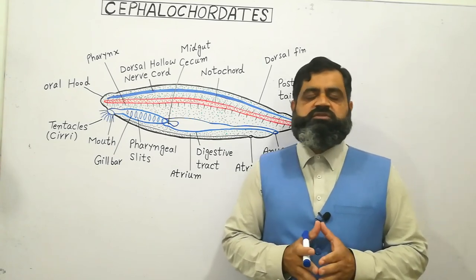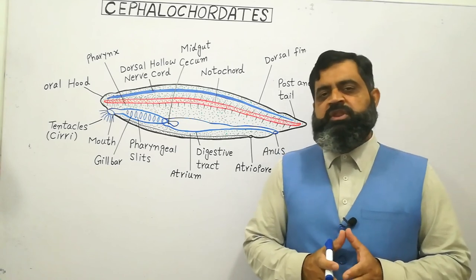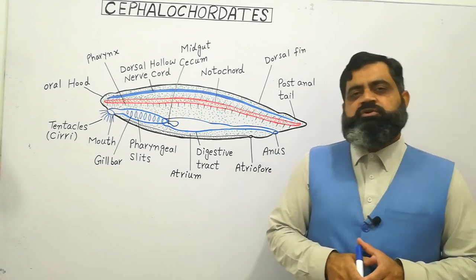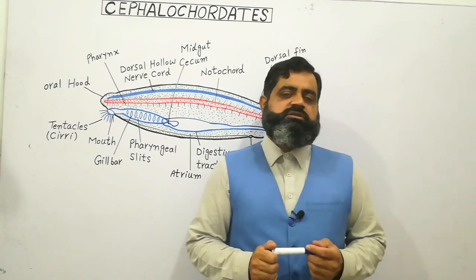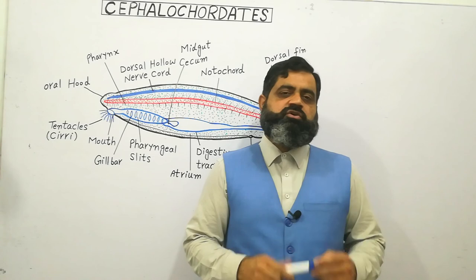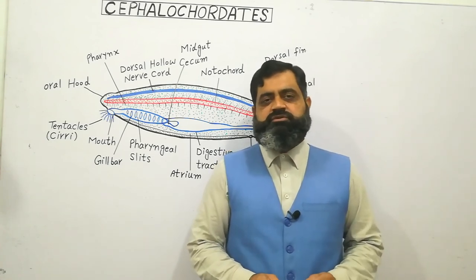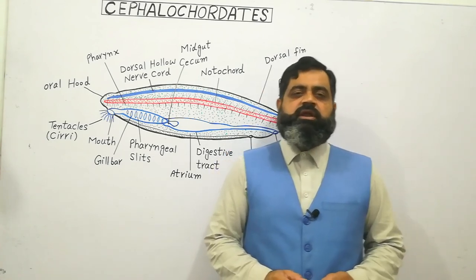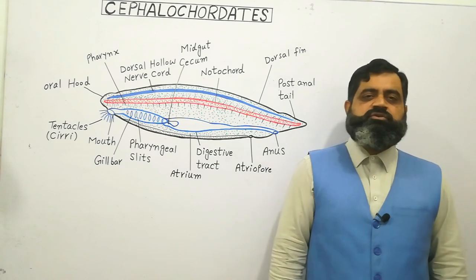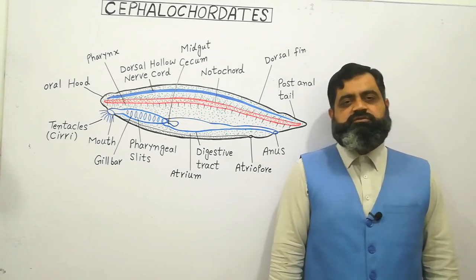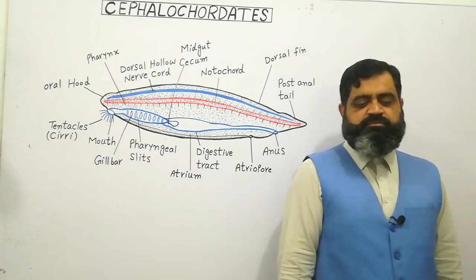The larva is bilaterally symmetrical, swims for some time in the water, and develops into an adult. So today we have discussed the structure of Cephalochordata, the example of which is amphioxus. I hope you have understood this lecture. If you did, please like, subscribe, and share it with your friends, and we'll see you in the next lecture. Bye.